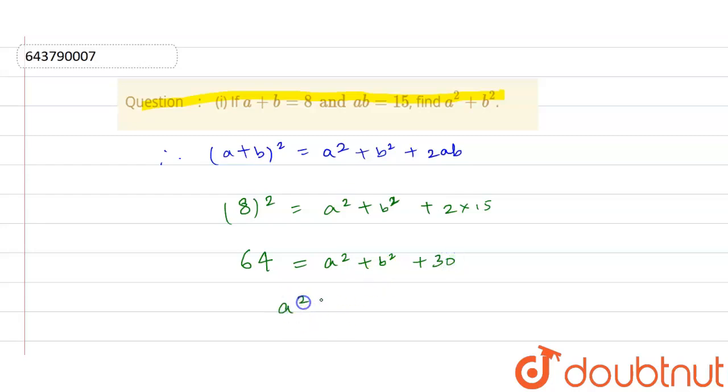So we get that the value of a square plus b square is equals to 64 minus 30, which is equals to 34. So our final answer is a square plus b square is equals to 34.